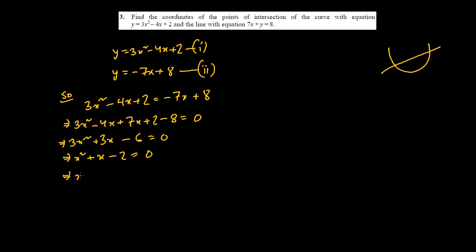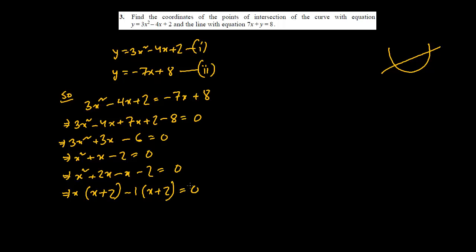Dividing both sides by 3 gives x² + x − 2 = 0. Factorising: x² + 2x − x − 2 = 0, so x(x + 2) − 1(x + 2) = 0, giving (x + 2)(x − 1) = 0. Therefore x = −2 or x = 1.